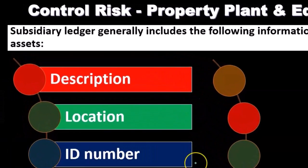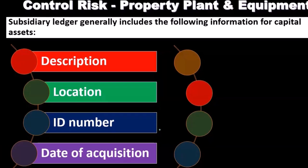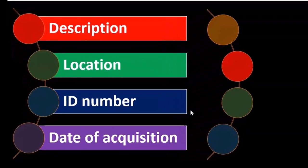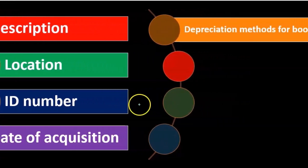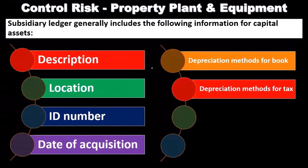The ledger should also include location, any ID number, and date of acquisition. When selling an asset, we typically use specific identification — not a flow method like FIFO — so an identification number is essential. The date of acquisition helps determine depreciation. We'll also need to track the depreciation method for book purposes and the depreciation method for tax purposes, as different asset classes may have different lives and methods.